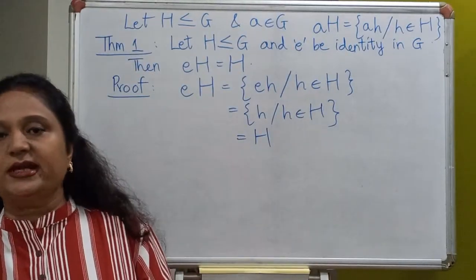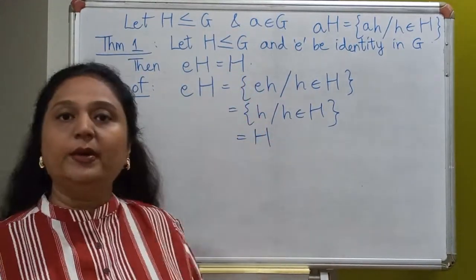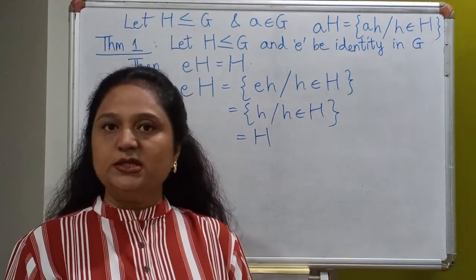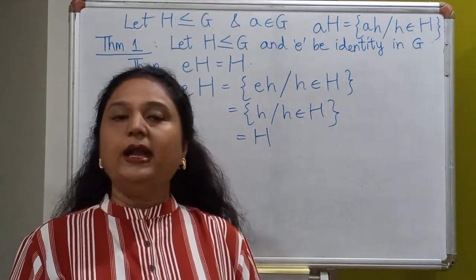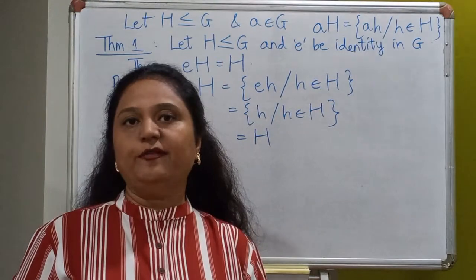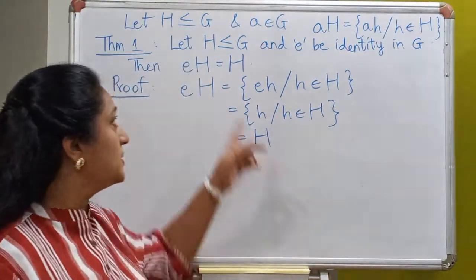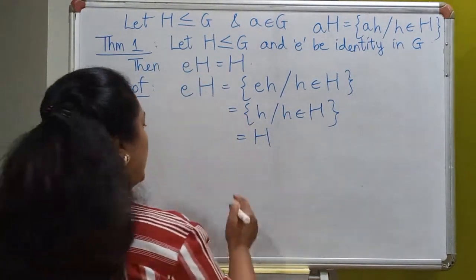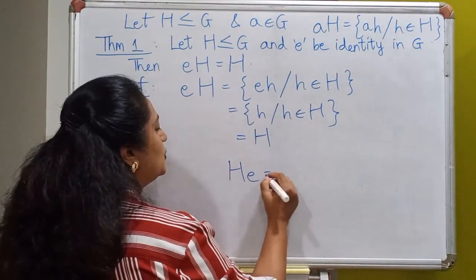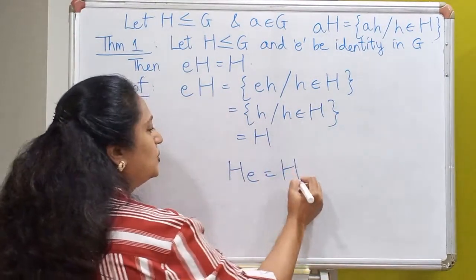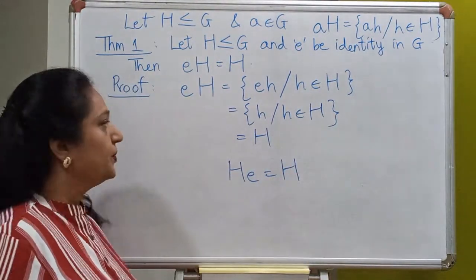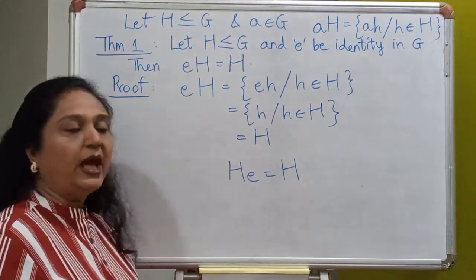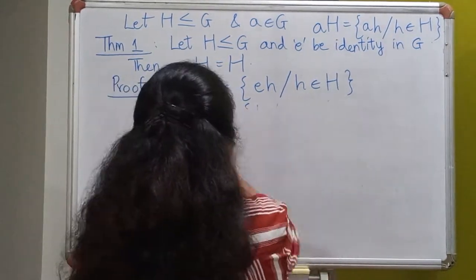A very good exercise will be: after every property I prove for left cosets, pause the video and prove the corresponding property for right cosets. For instance, the corresponding property for right cosets here would be that HE is also the same as H. So pause the video, prove this, and then go to the next theorem.